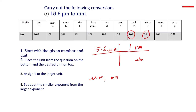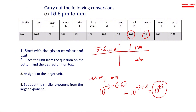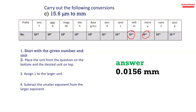Step 4: Subtract the smaller exponent from the larger — 10 to the power negative 3 minus 10 to the power negative 6 gives 10 to the power positive 3. This means we divide 15.6 by 1000 millimeters, giving us 0.0156 millimeters.